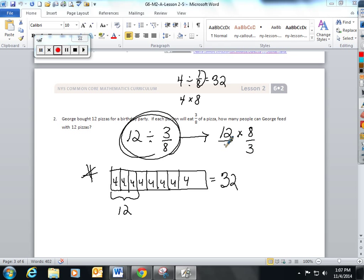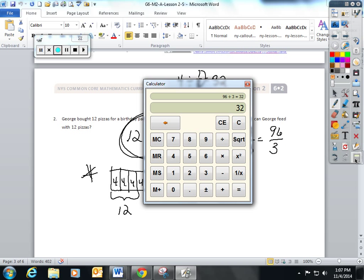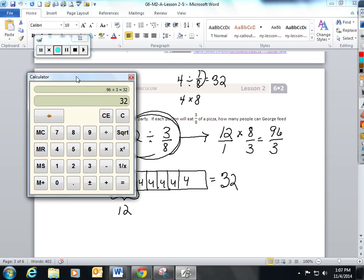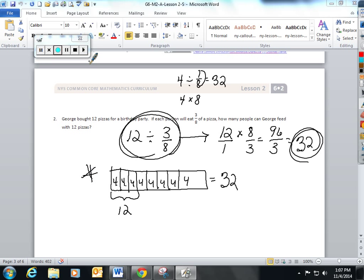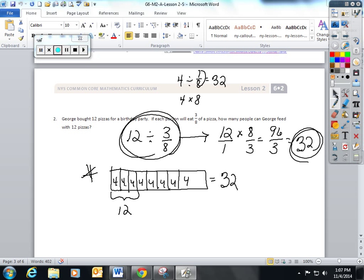Every whole number has a one underneath it. Twelve times eight is ninety-six. Three times one is three. Take your calculator out: ninety-six divided by three is thirty-two. This is why we draw pictures of dividing fractions—to lead students to understand why we can actually do the algorithm. I hope this was a great summary of lesson two from module two.